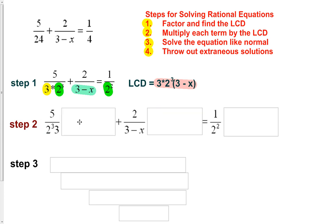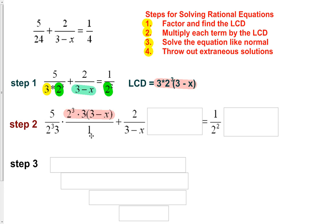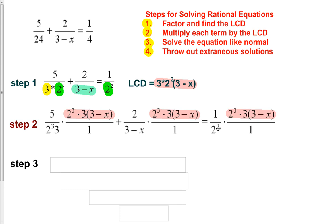Next, we take our original equation and multiply everything by the least common denominator. This will eliminate all of the fractions, making the problem much easier to solve. I'm going to write it over 1 because when we multiply fractions it's easier to see. So 3 times 2 cubed times the quantity 3 minus x — the whole thing is multiplied by every term. Remember, we have to do the same thing to all terms to keep everything equal and in balance.